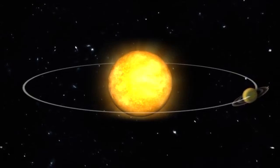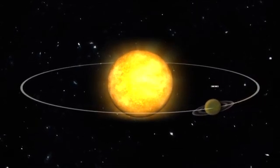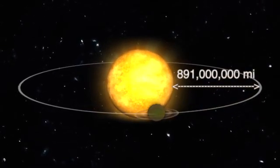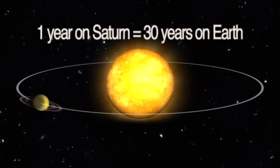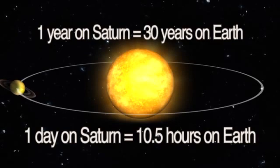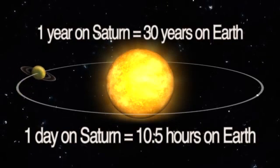Like the other planets, Saturn has an elliptical orbit and on average is 891 million miles from the sun. Saturn takes 30 Earth years to orbit around the sun, and a day on Saturn takes about 10.5 Earth hours.